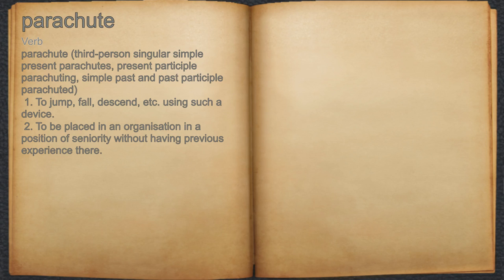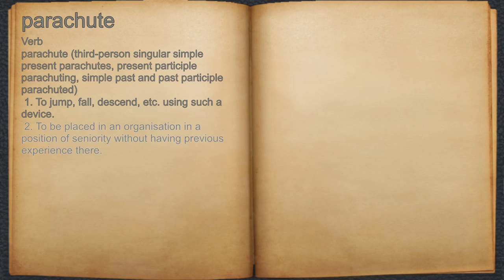Parachute. Verb. 1. To jump, fall, descend, etc., using such a device. 2. To be placed in an organization in a position of seniority without having previous experience there.